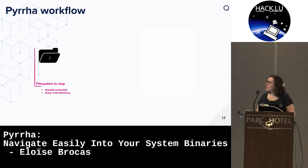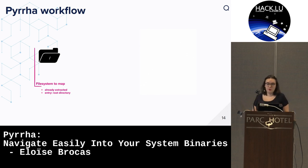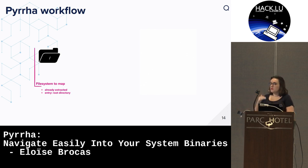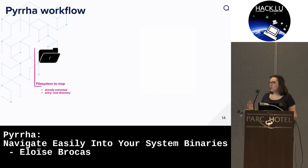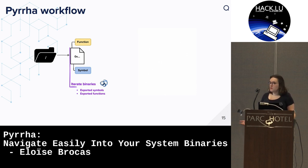Now let's take a look at the Pyra workflow. First, we take as input an already extracted firmware. If you need to extract your firmware image with specialized tools like binwalk, unblob, or just unzip your file to create the whole directory. Then you give as input the root directory - it will be considered as the root directory for all symlink resolution. If you want to map only a sub-part of the system, it's really important to recreate the whole arborescence before.